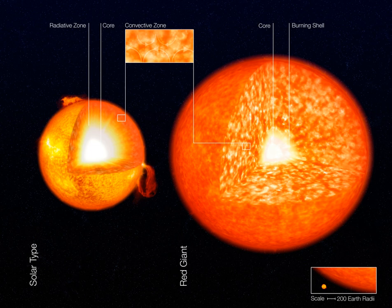Low-mass main sequence stars, such as red dwarfs below 0.35 solar masses, as well as pre-main sequence stars on the Hayashi track, are convective throughout and do not contain a radiation zone. In main sequence stars similar to the Sun, which have a radiative core and convective envelope, the transition region between the convection zone and the radiation zone is called the tachycline.